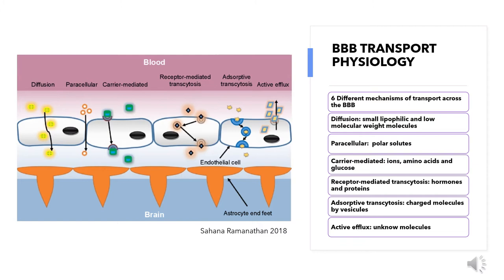Carrier-mediated transport is a highly controlled and specific mechanism by carrier proteins with the aim of transporting ions, amino acids and glucose from blood plasma to brain extracellular space. Receptor-mediated transcytosis is a system that transports big or hydrophobic molecules such as hormones and proteins, thanks to specific receptors that form a vesicle which is released in the brain extracellular space. Absorptive transcytosis aims to carry charged molecules and is similar to the latter system but is not specific.